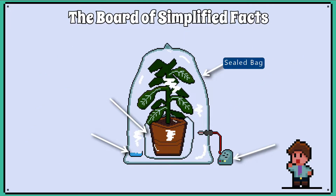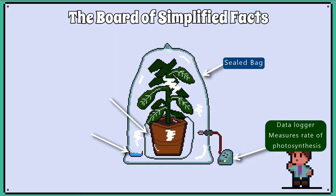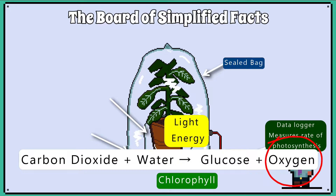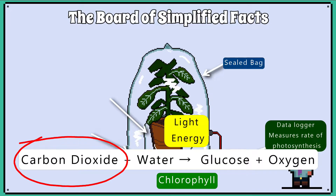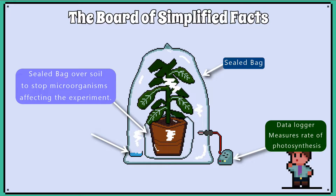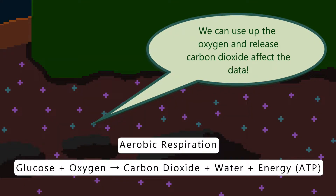Here we have a plant inside a sealed bag. There is a data logger that's measuring the atmosphere inside the sealed bag. It can measure the rate of photosynthesis by either measuring the oxygen produced over time or the carbon dioxide levels decreasing over time. Please notice that a second bag is sealing off the soil. This is to avoid microorganisms like bacteria or fungi respiring and affecting the oxygen and carbon dioxide levels, which may affect our data.